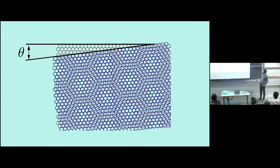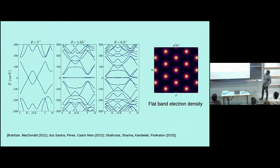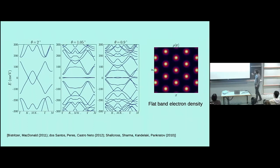So, magic angle graphene — there will be some overlap with Andre's talk that we just heard, so I can go through this pretty quickly. We take two layers of graphene, put them on top of each other with a twist. We get this moiré pattern and it gives us this approximate superlattice. Here you see the AA regions, which is where locally the two layers align. If you put black dots on these AA regions, they form a nice triangular lattice and the period of this lattice is much larger than the period of the monolayers.